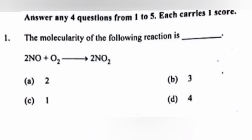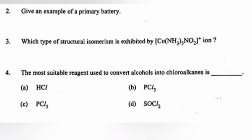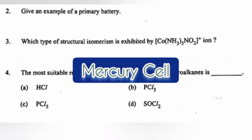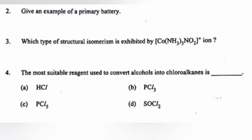Question 1: The molecularity of the following reaction — answer: B, 3. Question 2: To give an example of a primary battery — answer: mercury cell or dry cell. Question 3: Which type of structural isomerism is exhibited by [Co(NH₃)₅NO₂]⁺ ion?